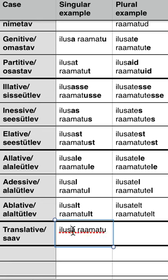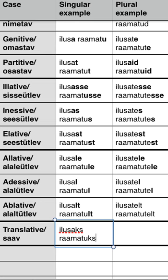So we have 'ilusa raamattu'. For this case, we have a rather uncommon ending — it would be two letters: 'ks'. The same for the noun: 'ks'. So the forms would be 'ilusaks' and 'raamattuks' — just like that.